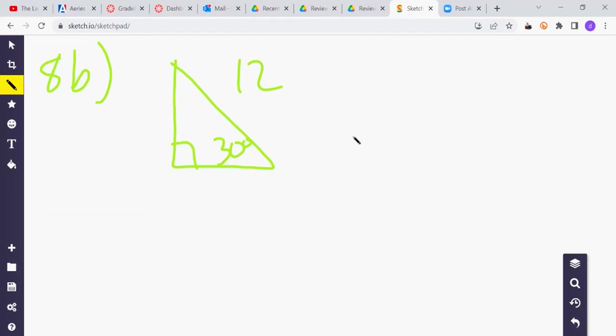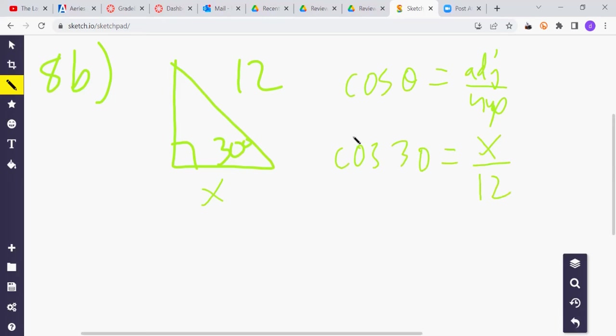I would probably, we could approach this so many different ways. We could use 30, 60, 90. We can use SOHCAHTOA. Why don't we just use SOHCAHTOA? You could use law of sines. A lot of different techniques. How about we just use SOHCAHTOA? Why don't we use cosine? Cosine of theta equals adjacent over hypotenuse.